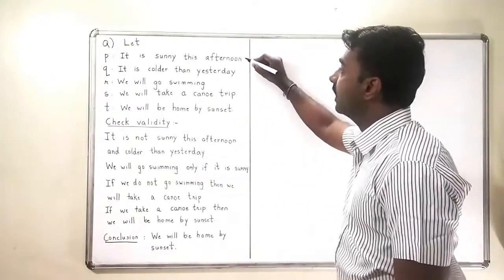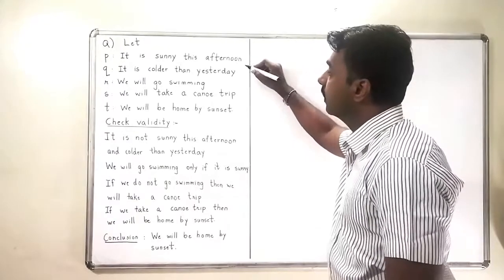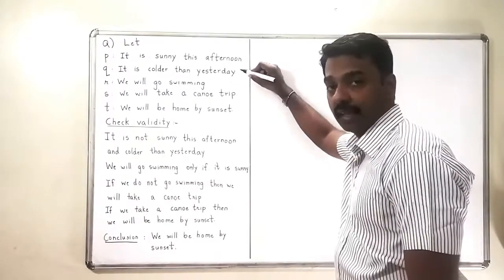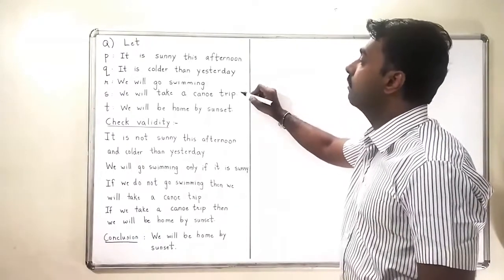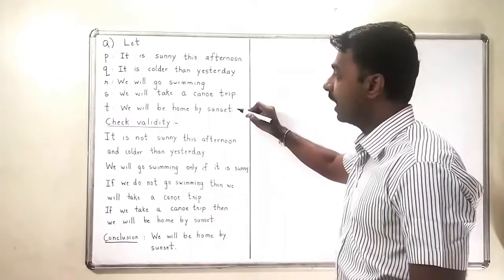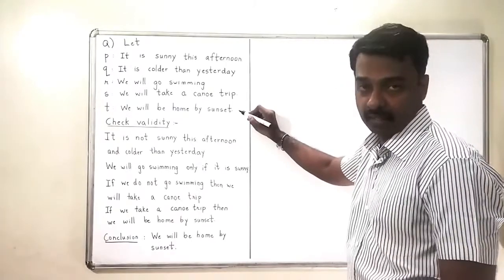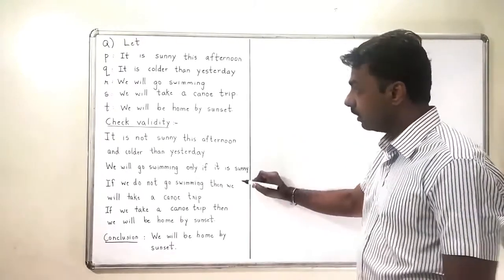First, P is it is sunny this afternoon, Q is that it is colder than yesterday, R is that we will go swimming, S is we will take a canoe trip, and T is we will be home by sunset. So now the argument starts.